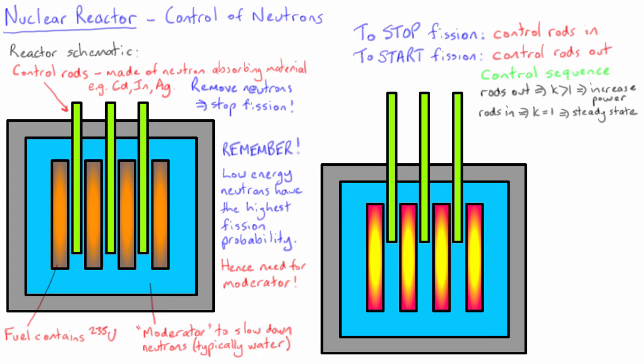To alter the power output up or down, you move the rods out or in respectively until you reach the desired power, before readjusting the rods to bring k back to a value of 1 again.